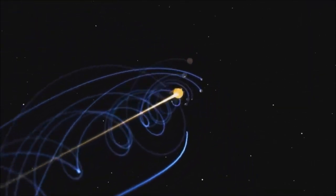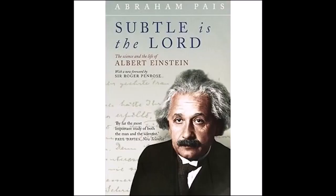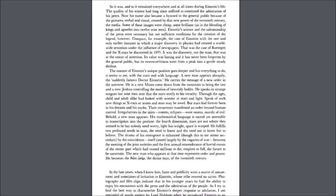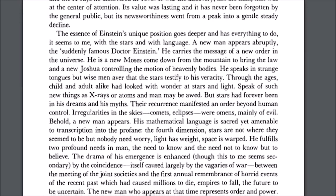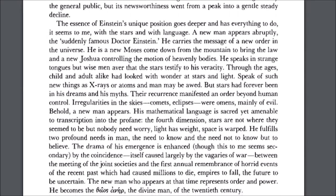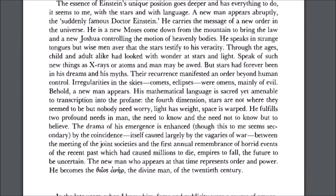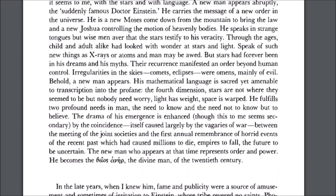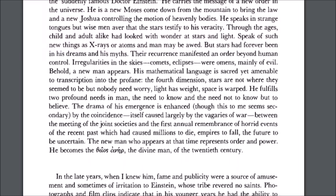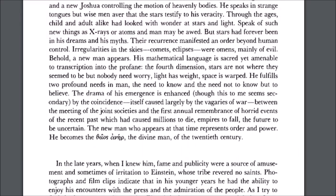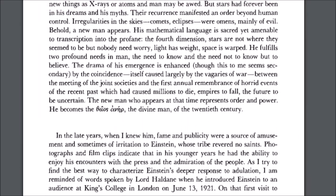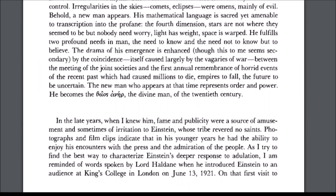As noted by Einstein biographer Abraham Pais put it, A new man appears abruptly, the suddenly famous Dr. Einstein. He carries the message of a new order of the universe. He is a new Moses come down from the mountain to bring a new law and a new Joshua controlling the motion of the heavenly bodies. The new man who appears at the time represents order and power. He becomes the Theos Aner, the divine man of the 20th century.